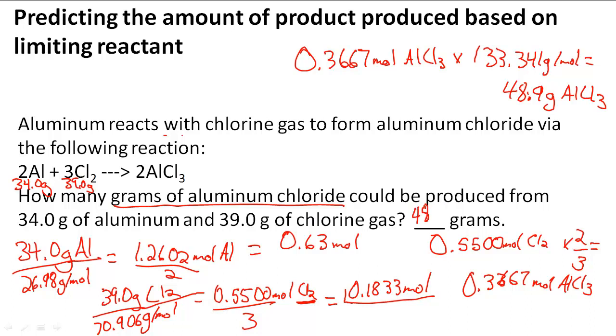The answer to this question is 48.9 grams. First we have to identify the limiting reactant through those processes, and then use the limiting reactant to find out the amount of the product that is going to be produced.